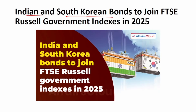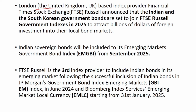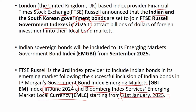Next news: Indian and South Korean bonds are to join the FTSE Russell Government Bond Index in 2025. The London-based index provider FTSE Russell announced that Indian and South Korean government bonds are set to join its government indexes in 2025. This is the third index where Indian government bonds will be listed. The other two are JP Morgan Government Bond Index Emerging Markets (listed June 2024) and Bloomberg Index Services Emerging Market Local Currency from January 31, 2025. Indian sovereign bonds will be included in the FTSE Emerging Market Government Bond Index from September 2025.